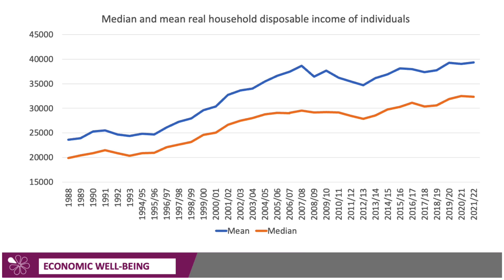Median incomes have grown less quickly as well. You can see that growing gap between the mean and the median — the mean is skewed by the super high incomes of people at the top of the income distribution. A lot of economists now think that if we're measuring well-being, instead of measuring GDP per capita, we should focus instead on median real disposable incomes.